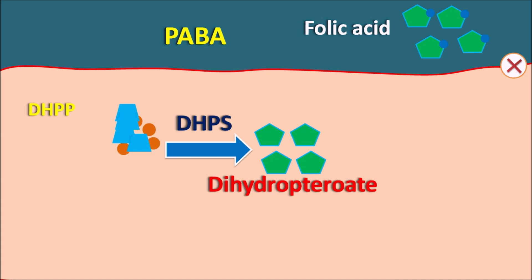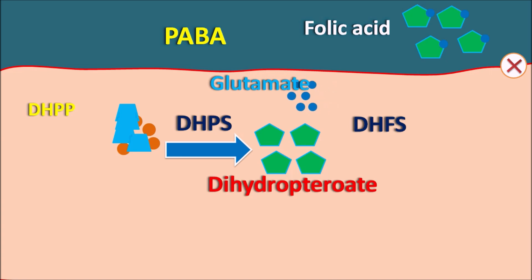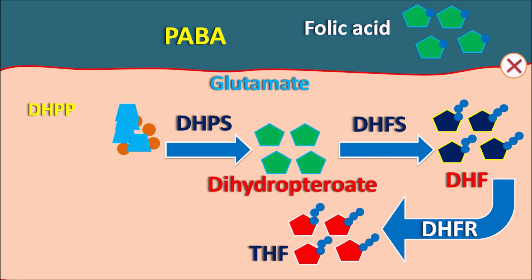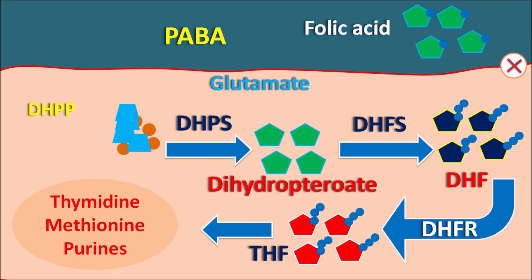Dihydropteroate still requires glutamate residues to be converted into a folic acid derivative. Glutamate molecules combine with dihydropteroate in a step mediated by DHFS (dihydrofolate synthase enzyme), converting it into dihydrofolate (DHF). This dihydrofolate is further reduced by dihydrofolate reductase (DHFR) enzyme into tetrahydrofolate (THF). Tetrahydrofolate is the active form of folic acid, involved in the synthesis of thymidine, methionine, and purines.